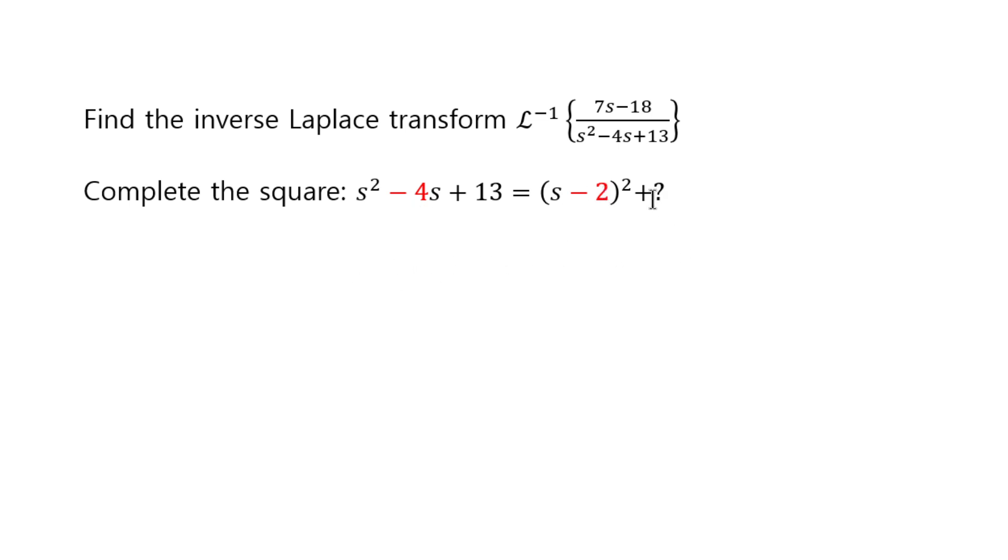And the second step is figuring out what this number should be. Because the left and right side should agree, think about what the constant term this would produce. You would get negative 2 squared plus some number, right? That has to agree with 13. So to match 13 with negative 2 squared plus something, negative 2 squared is positive 4. 13 minus 4 is 9, so this question mark must be 9.